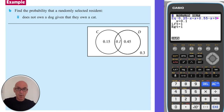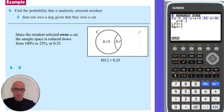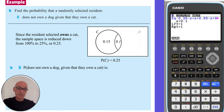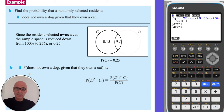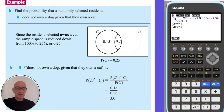We're also asked to calculate the probability that a randomly selected resident doesn't own a dog, given that they do own a cat. Given that they own a cat, the sample space reduces from 100% down to 25%, which is 0.25. The probability that the resident doesn't own a dog given they own a cat equals the intersection of cats and not-dog, which is 0.15, divided by cats, which is 0.25. That equals 0.6.